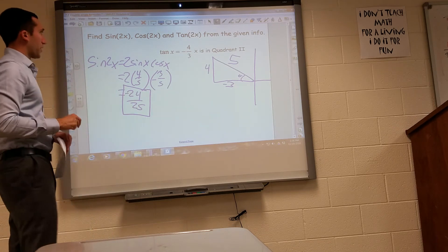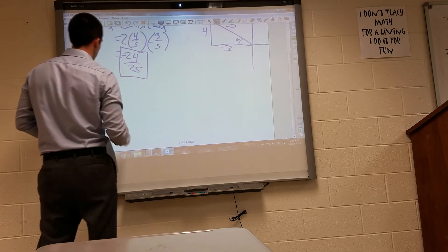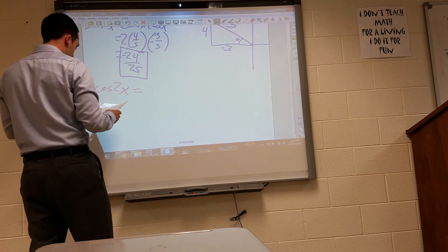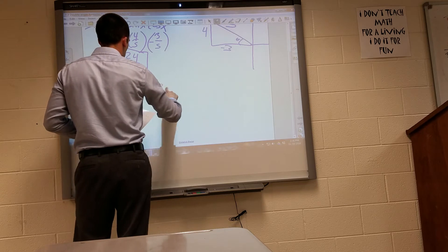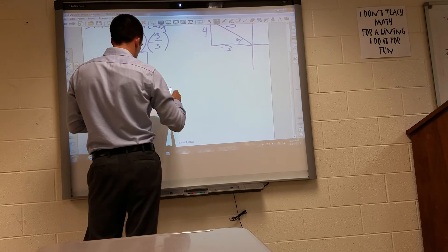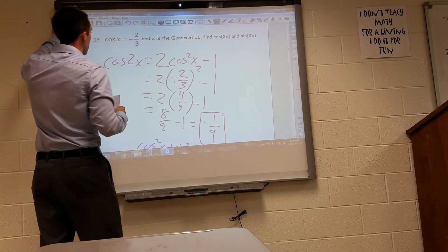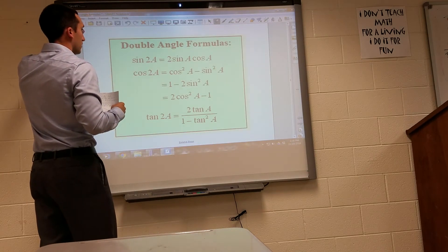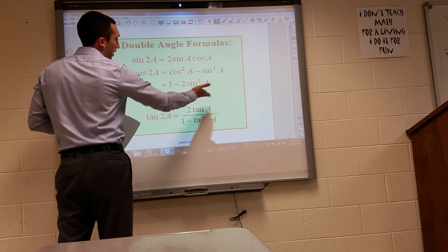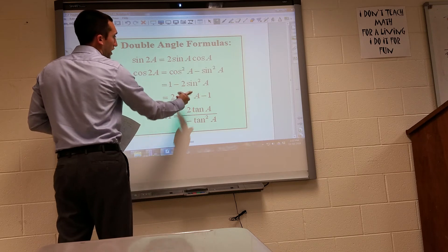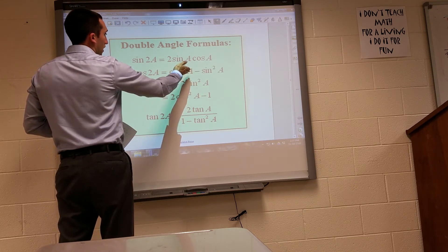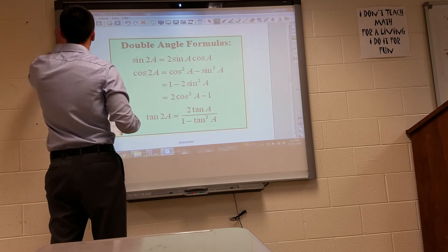The second value they wanted us to find was cosine of 2x. So cosine of 2x is cosine squared x minus sine squared x. Or if you only know cosine, you can do this one here. So you can use any one of these three. I'm going to use cosine squared of x minus sine squared of x because I know them both.